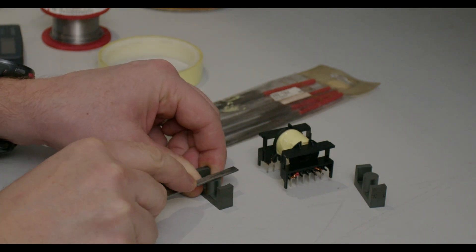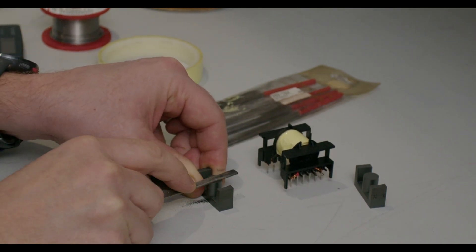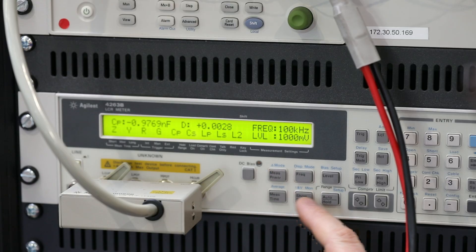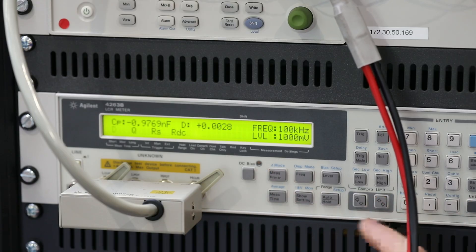In a flyback transformer, the air gap in the magnetic circuit is where energy is stored during the on time of the primary switch. This energy is released to the secondary when the primary switch turns off.